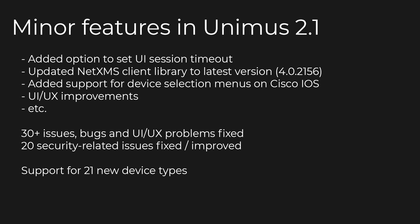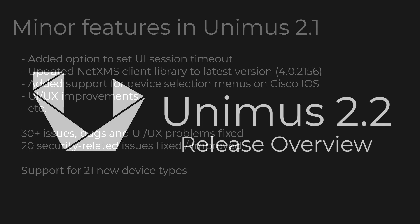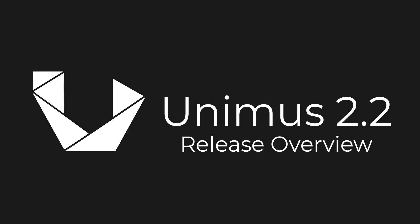As with every new release, in 2.2 we are adding support for 12 new device types from 9 separate networking vendors. As always, if you find any issues or have any feedback regarding this release or Unimus itself, please post on our forums or let us know through any of our social channels or live chat on our website. Thanks!